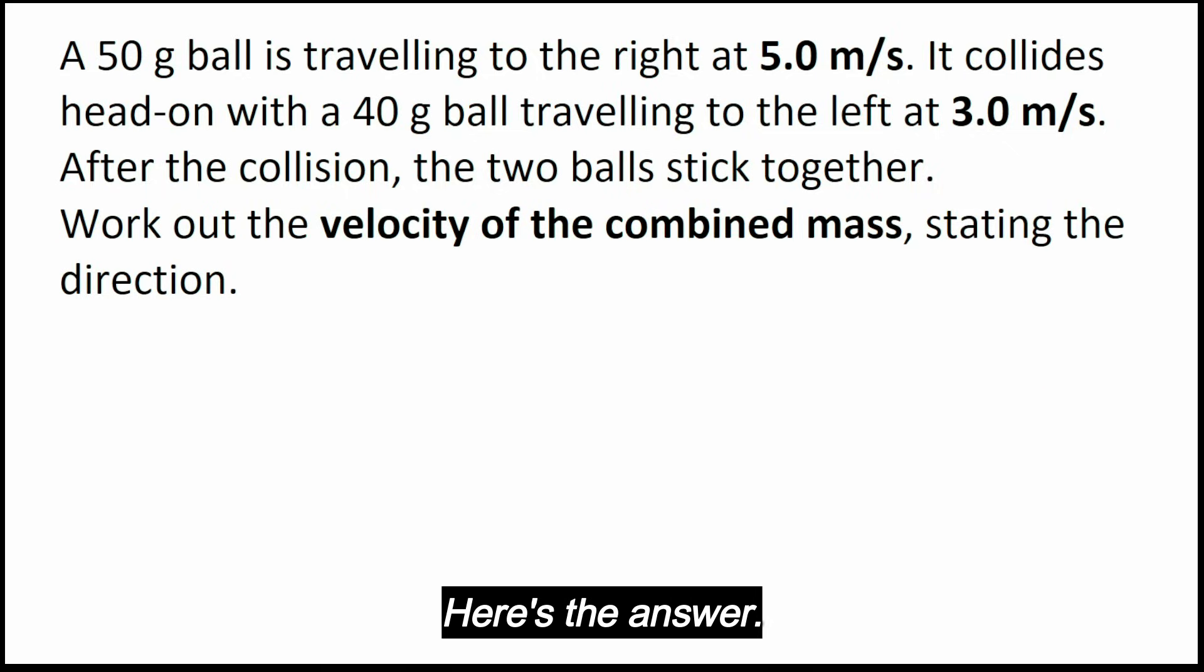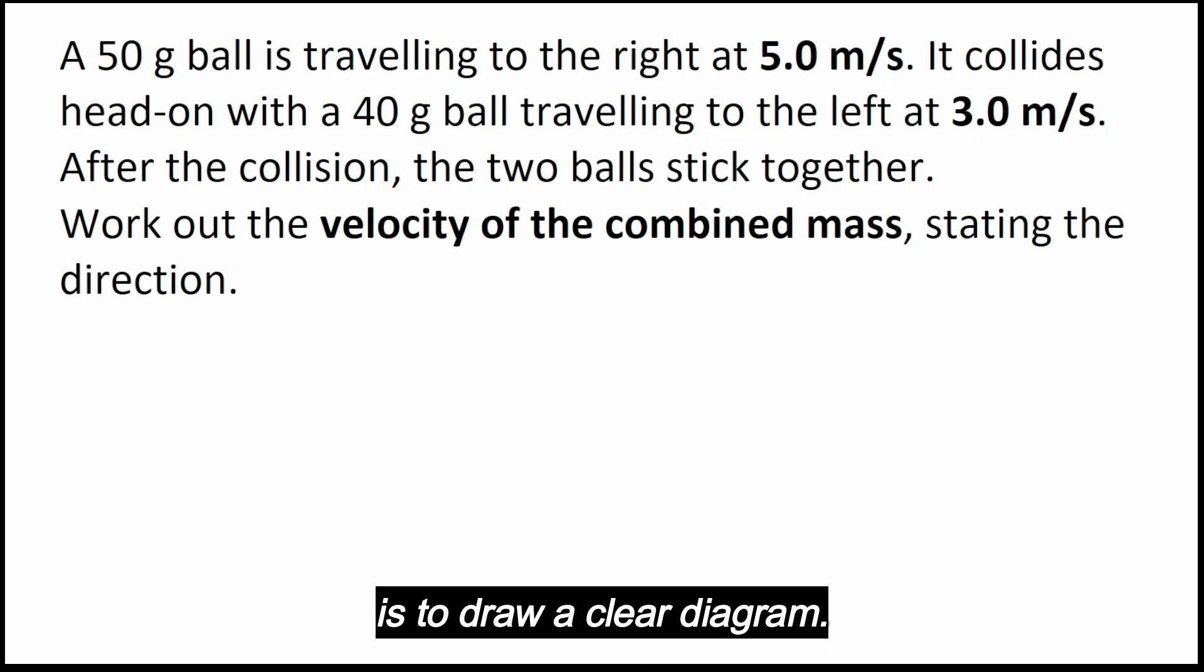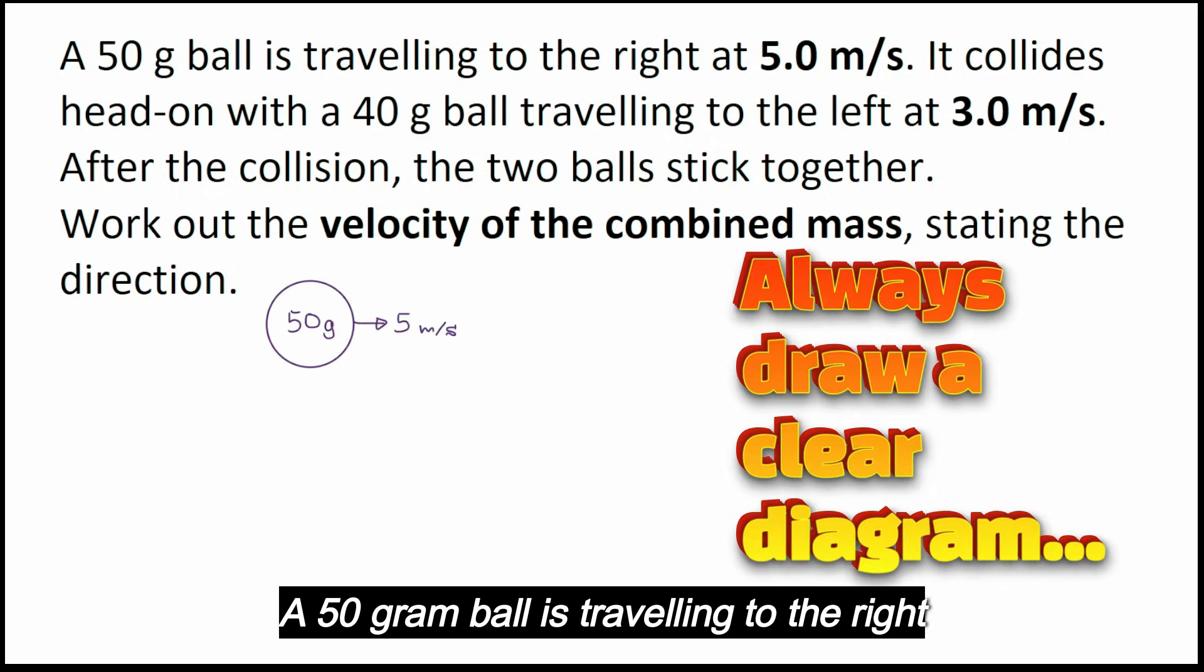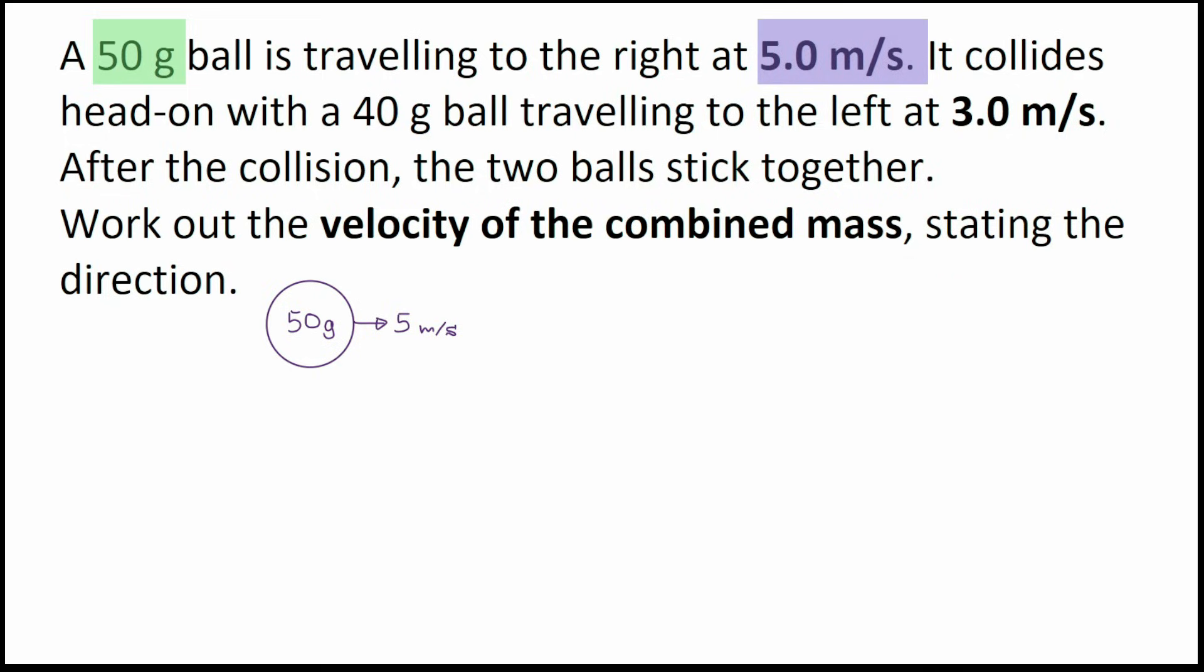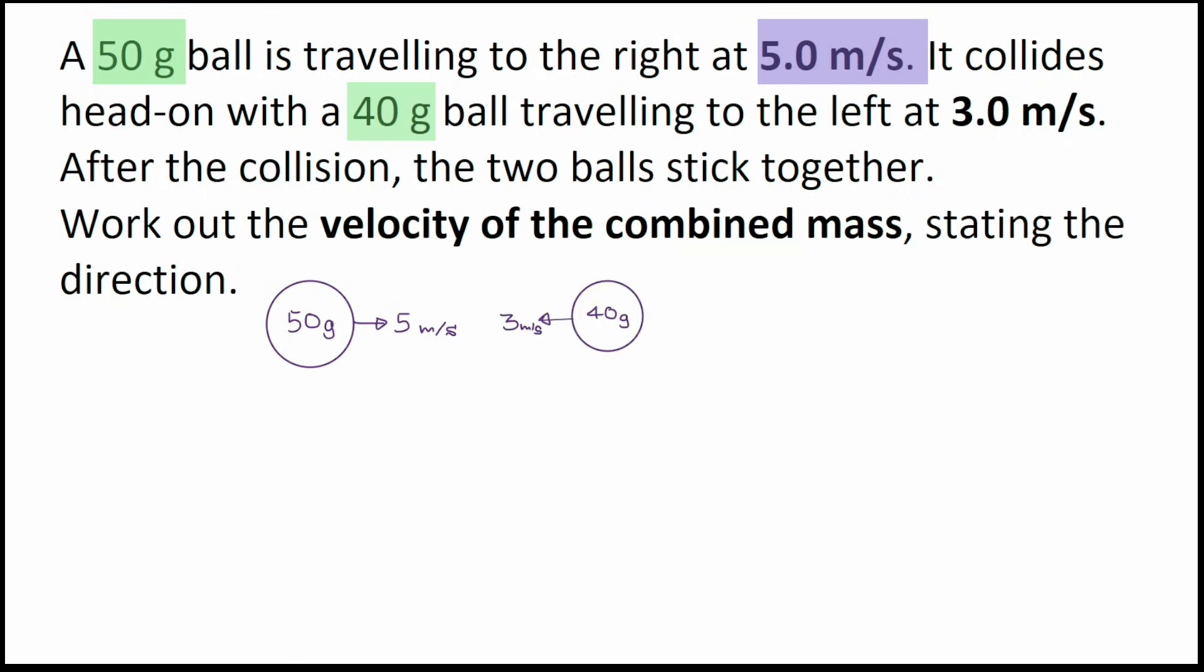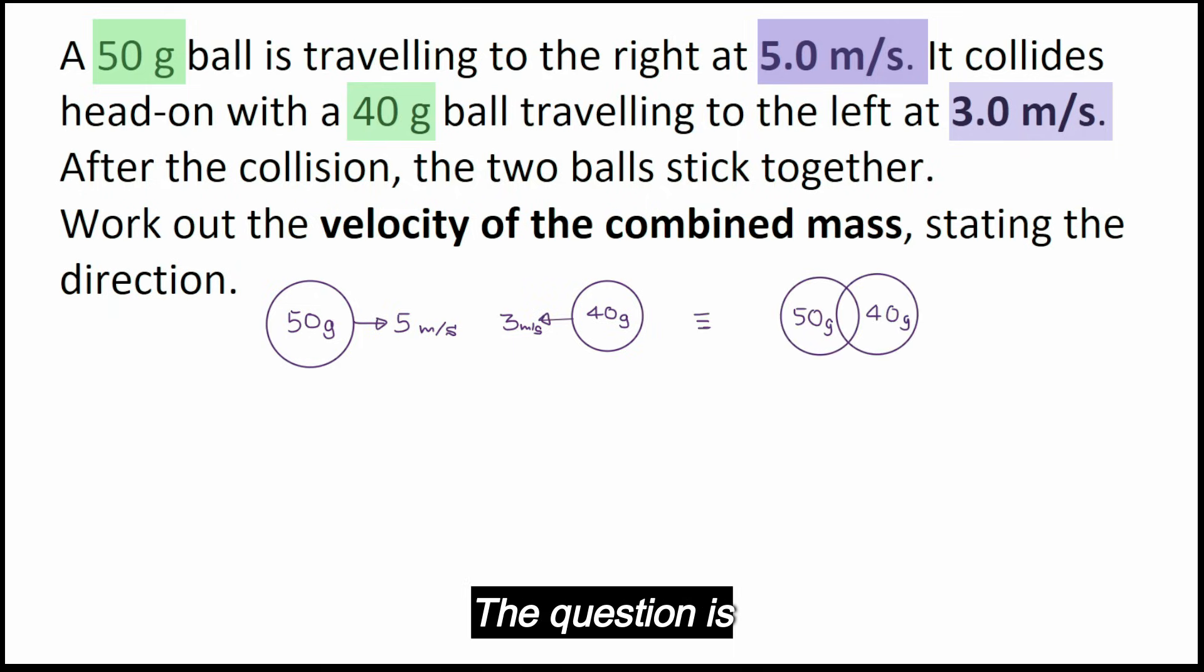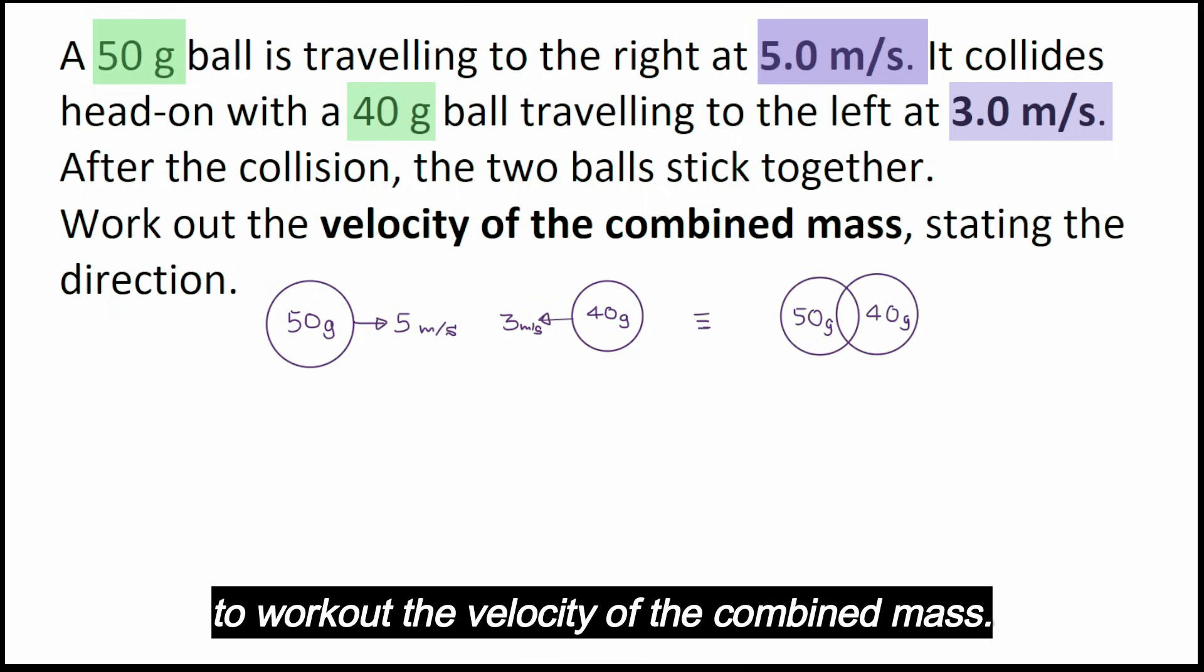Here's the answer. Now in a question like this, the first step is to draw a clear diagram. A 50 gram ball is traveling to the right at 5 meters per second. It collides head-on with a 40 gram ball traveling to the left at 3 meters per second. After the collision, the two balls stick together. The question is to work out the velocity of the combined mass.